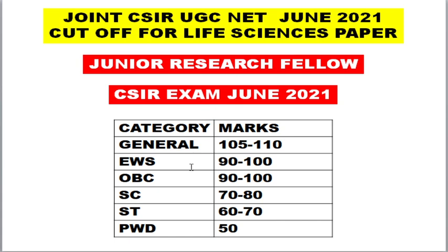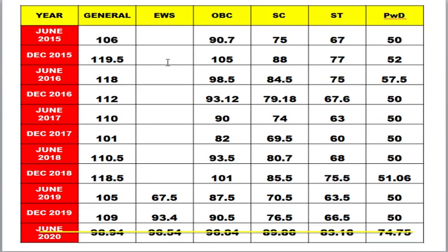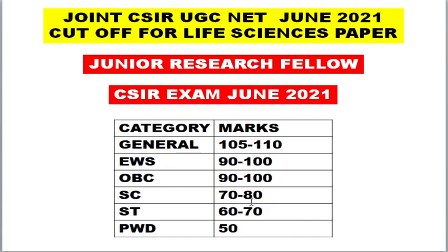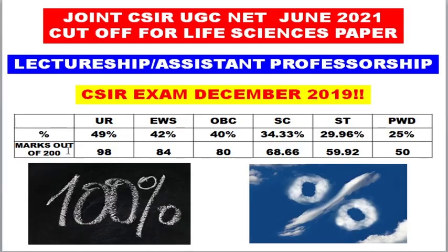For EWS and OBC category, you should get 90 to 100 marks. EWS was introduced from June 2019, so there isn't much historical data. For SC category, you need to get around 70 to 80 marks, and for ST category, 60 to 70 marks. For persons with disability, you need to get 50 out of 200. To summarize: General — 110, EWS/OBC — 100, SC — 80, ST — 70, PwD — 50 out of 200.